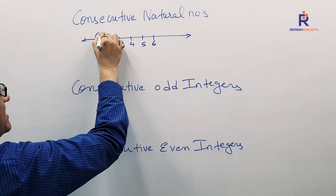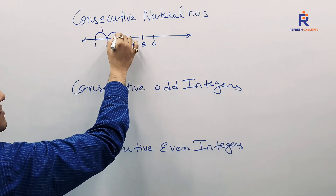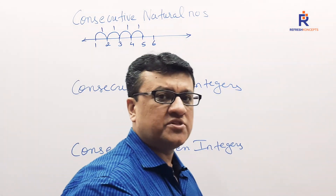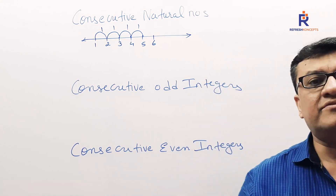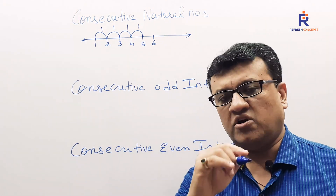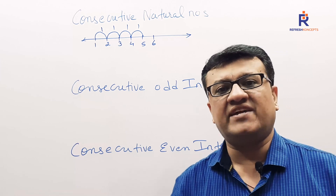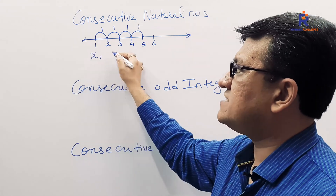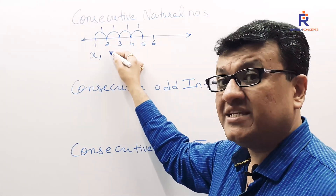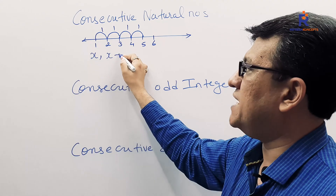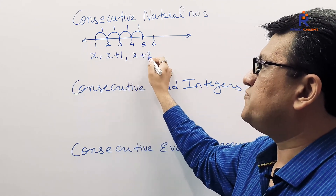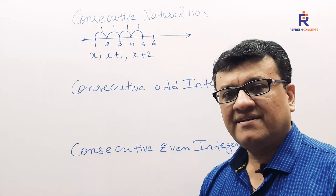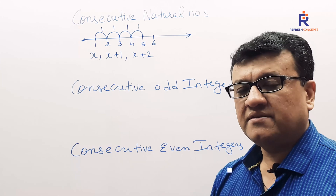What is the difference between two consecutive natural numbers? The difference is 1. So if somebody says there are three consecutive natural numbers, I shall always say: let the three consecutive natural numbers be X, X plus 1, X plus 2.